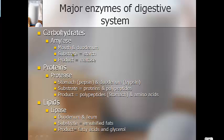Here are the enzymes your digestive system uses: Amylase is released by the salivary glands in your mouth and by the pancreas into the duodenum — it breaks down starches and carbohydrates. Protease is released by your stomach as pepsin and by the pancreas into the duodenum as trypsin — it breaks down proteins. Lipase is released by your pancreas into the duodenum and by your ileum — it breaks down fats. Bile from your liver also helps break down those fats.